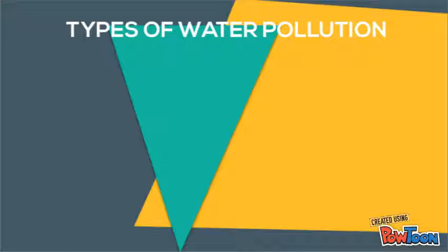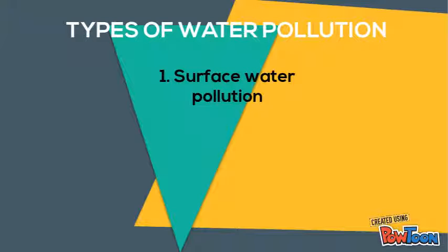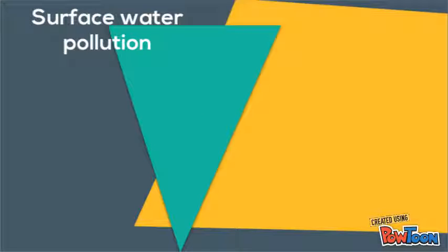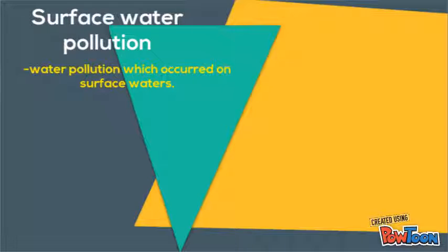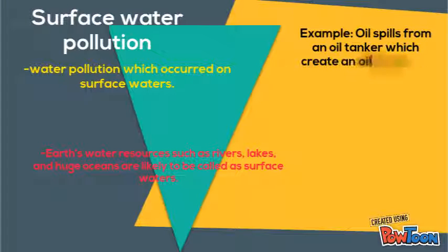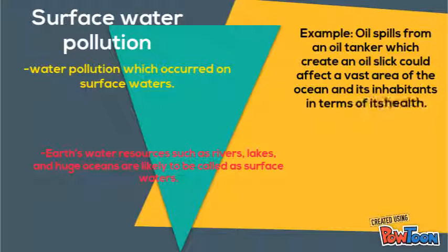There are two types of water pollution: the first is surface water pollution and the second is groundwater pollution. Surface water pollution is water pollution which occurs on surface waters. Resources such as rivers, lakes and oceans are referred to as surface waters. For example, oil spills from an oil tanker.